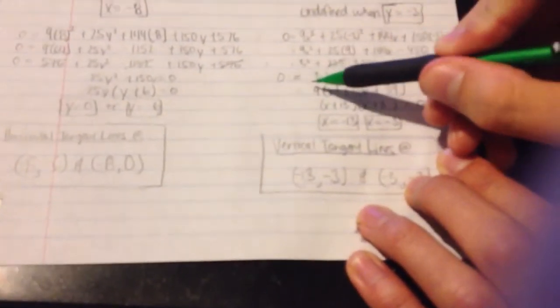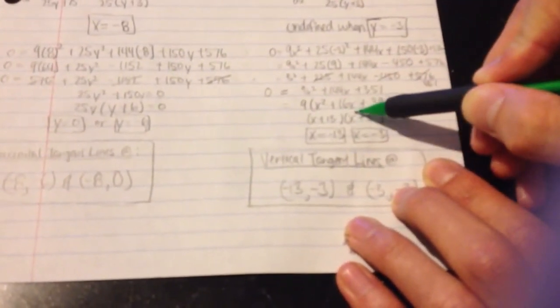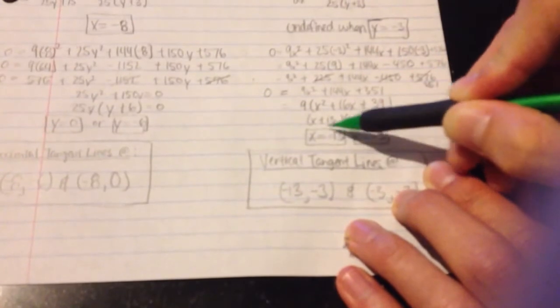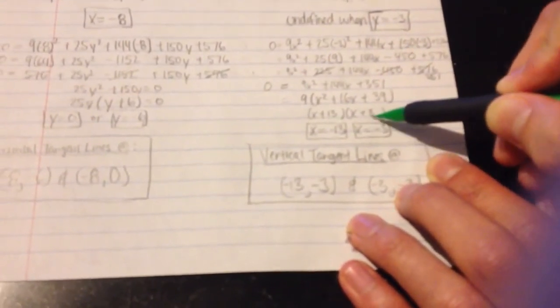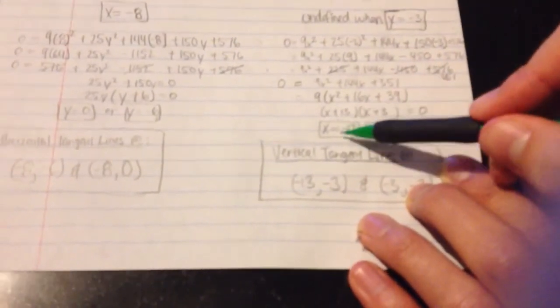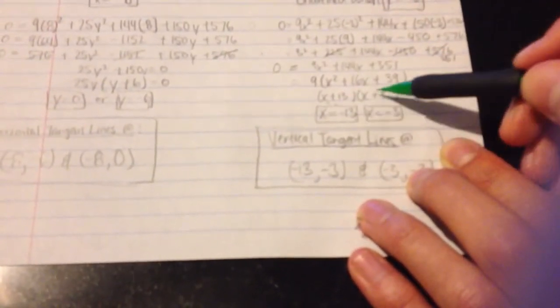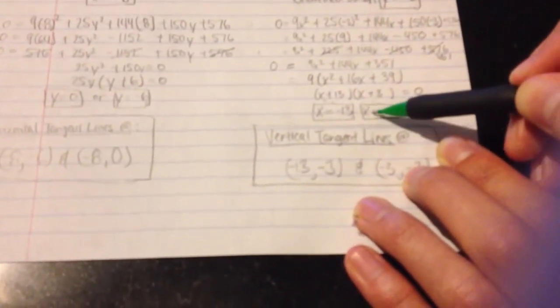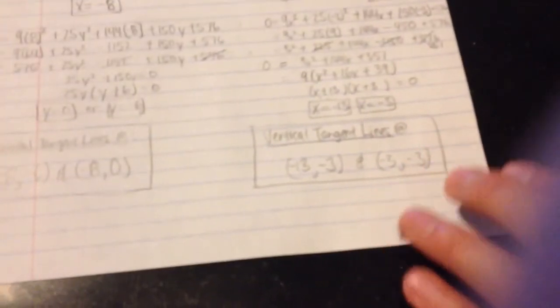On the other side, once this is set to 0, I can factor out a 9, leaving x squared plus 16x plus 39, which factors very nicely. You're left with x plus 13 times x plus 3. When you figure out which ones make that 0, you plug in negative 13 there, that'll make that one 0. x could also possibly be negative 3, and that would make that one 0 as well.